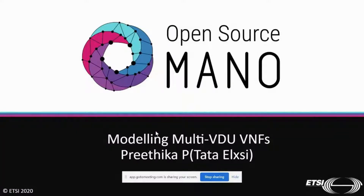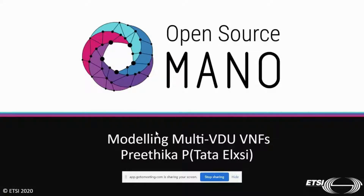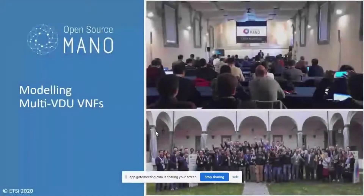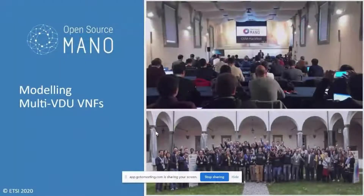Let's start this session on modeling multi-VDU VNFs. This session covers how to write a VNF descriptor which has multiple VDUs in it, and how your network service is going to look when you onboard it from OSM. To understand how to write a multi-VDU VNF, we need to first identify the network service, how contracts are defined, and how modeling is handled in VNF descriptors.